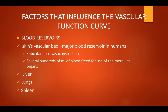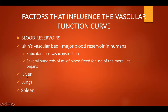The next factor is the blood reservoir. In humans, volume changes in the spleen are considerably less extensive. The different blood reservoirs are the skin, liver, lungs, and spleen. The skin vascular bed is the major blood reservoir in humans, wherein subcutaneous vasoconstriction occurs and several hundreds of milliliters of blood are freed for the more vital organs. The spleen is less extensive in humans compared to other organisms.